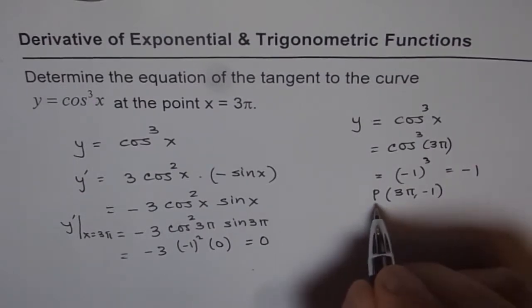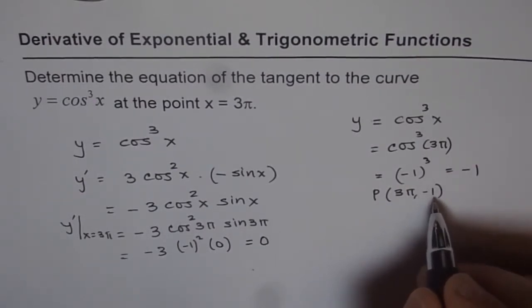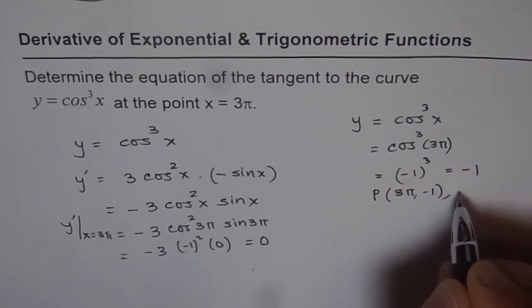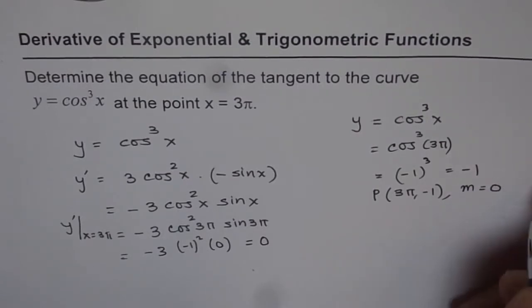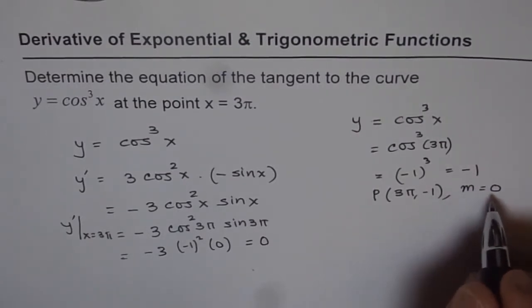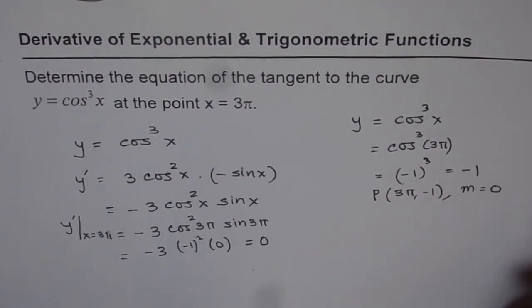We know the point is (3π, -1) where we need to find the equation of the tangent line, and the slope m = 0. So it is a horizontal line, and the equation should be the y value.